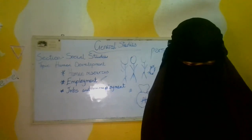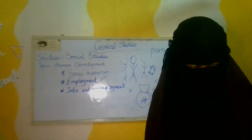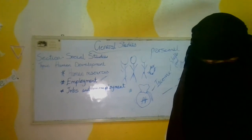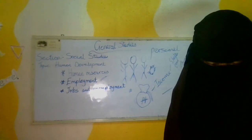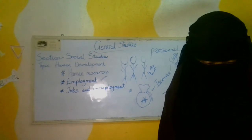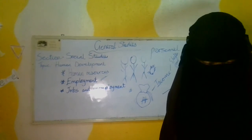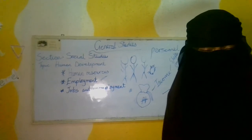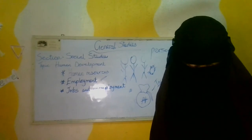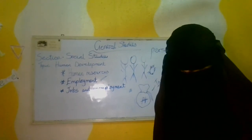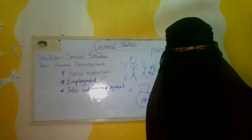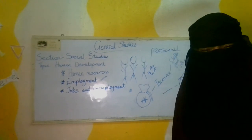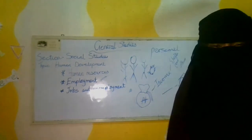Lesson summary: Human resource development is about making sure people are being productive in the community and are improving the skills they have through training. There are various reasons why people should be employed, and many jobs exist in each community. Sometimes people find it hard to find jobs, and we looked at the reasons why and what can be done. Please look at the lesson activities and do them in your notebook. Complete the activities in your workbook and submit on Friday. If you have any questions regarding this lesson, please send them to the group.